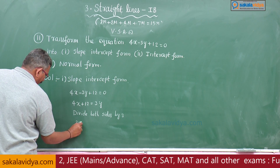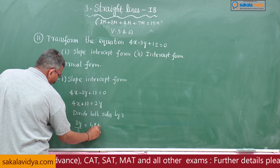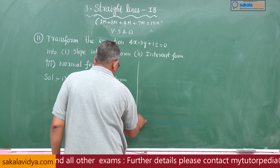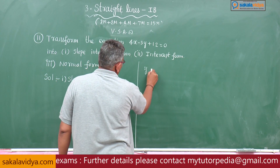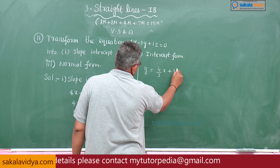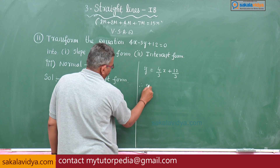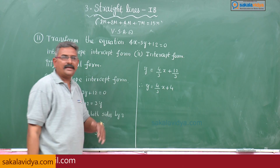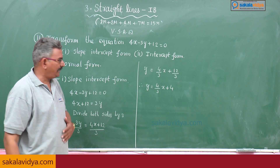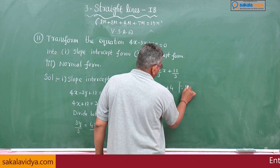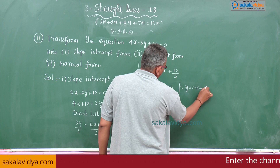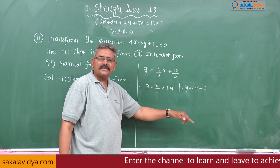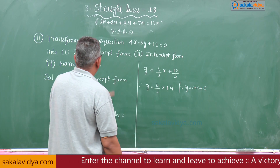So, 3y divided by 3 gives y, and 4x plus 12 divided by 3 gives y equals 4/3 x plus 4. This appears in the form y equals mx plus c, where m equals 4/3 is the slope of the line, and c equals 4 is the y-intercept.